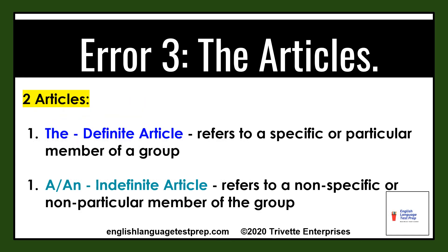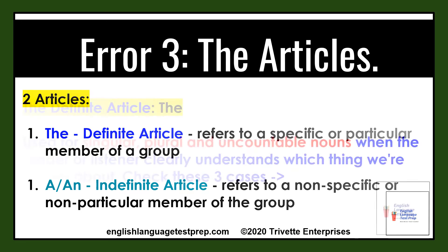There are only two articles in English. The definite article, the, which refers to a specific or particular member of a group. Or the indefinite article, a or an, which refers to a non-specific or non-particular member of the group. The definite article: the. Check these three cases.